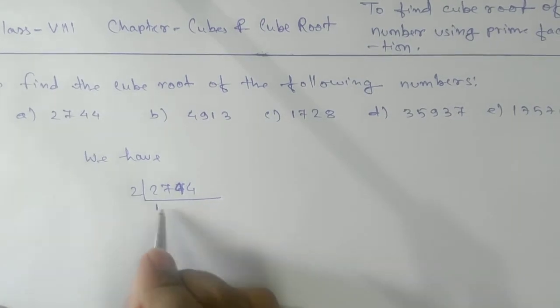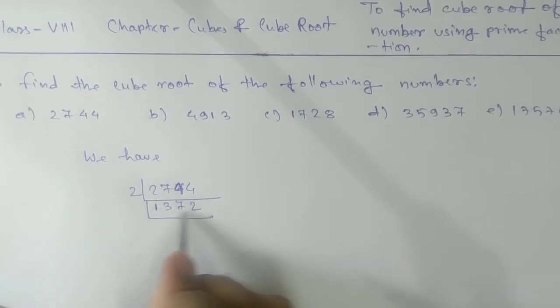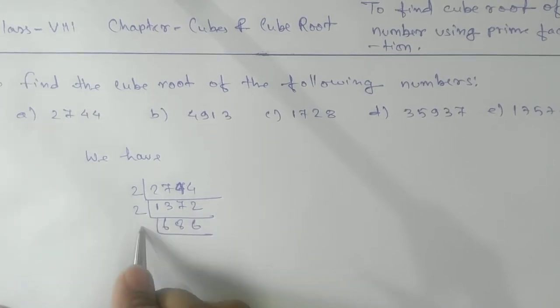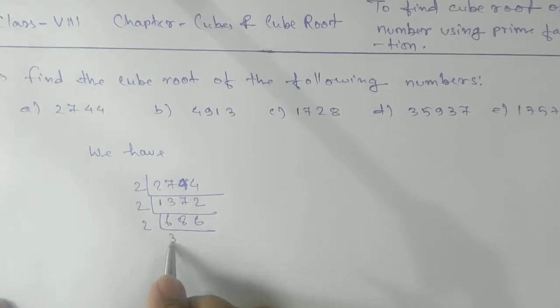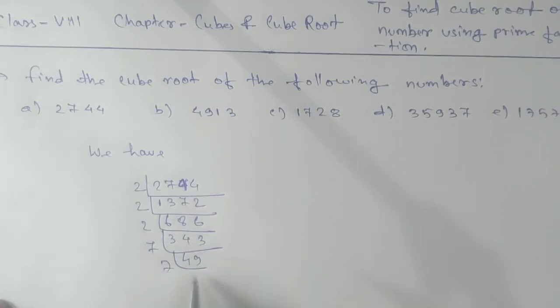We are getting here 13872. Again we are getting an even number. We'll take 2 here. 6, 8, 6. Again 2. We are getting here 3, 4, 3 and next 1749, and then 7.